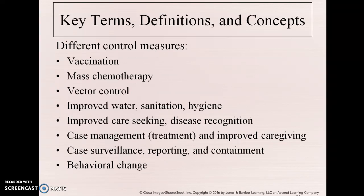We have different control measures such as vaccination, mass chemotherapy — which would be medications — vector control such as drying up water so mosquitoes can't live, improved water, sanitation, and hygiene such as hand washing, improved care-seeking and disease recognition through screenings like the rapid test for HIV, case management for treatment and care after contracting the disease, case surveillance through reporting from doctors' offices and labs up to local government, state government, and then the CDC — the Centers for Disease Control — and behavioral change as well.